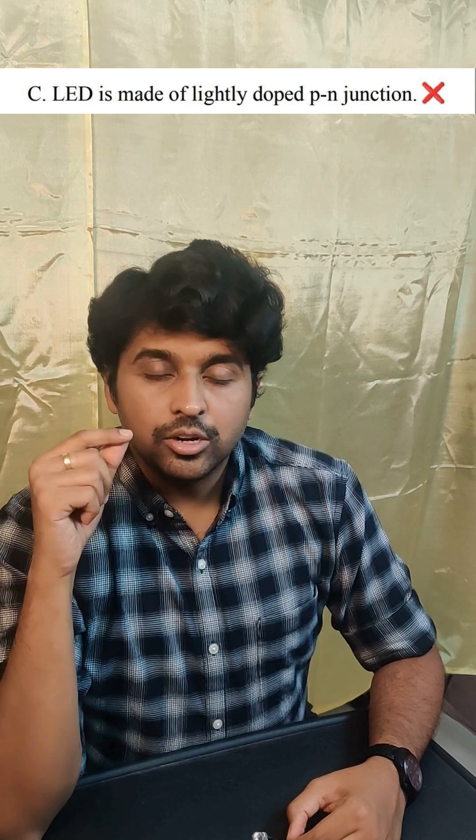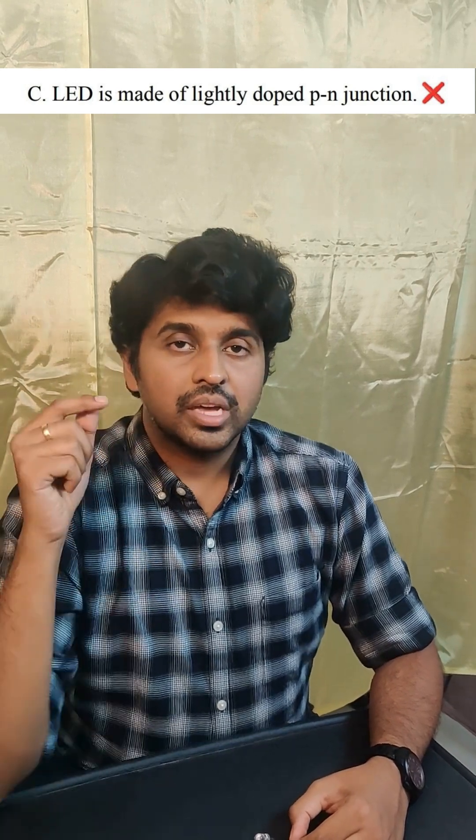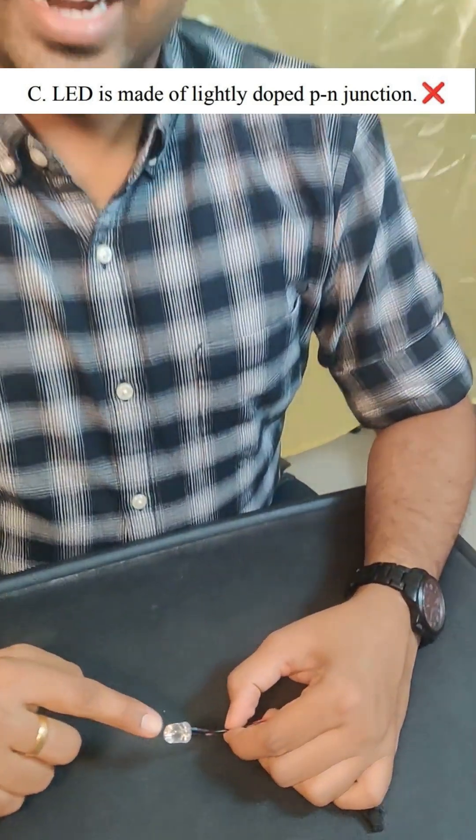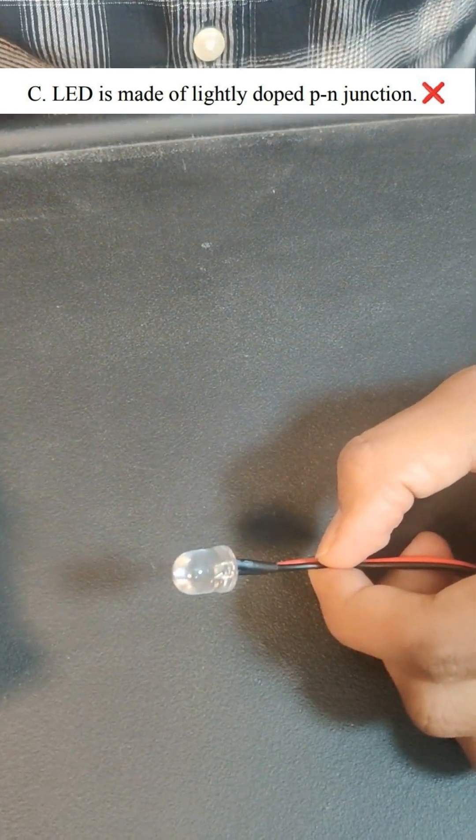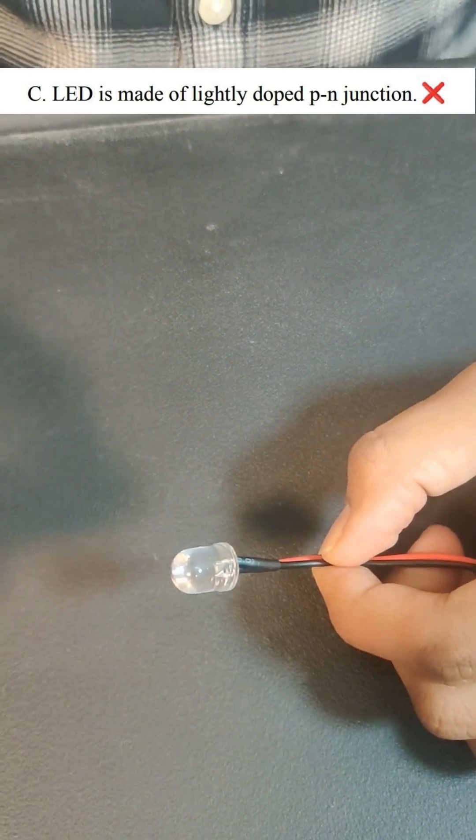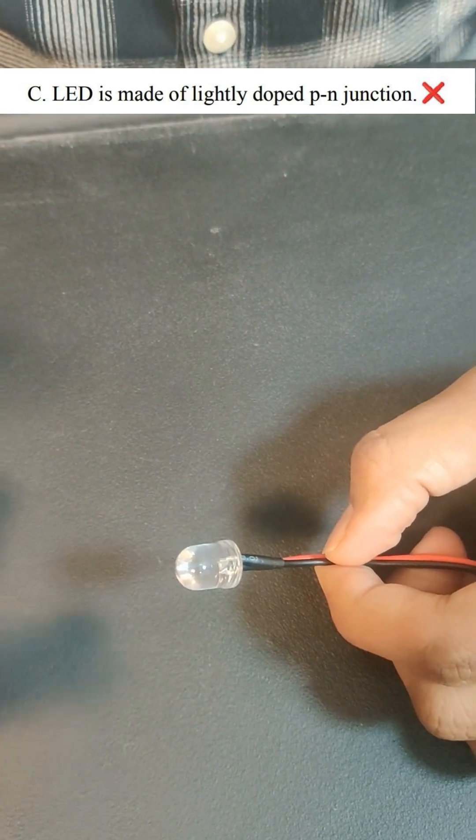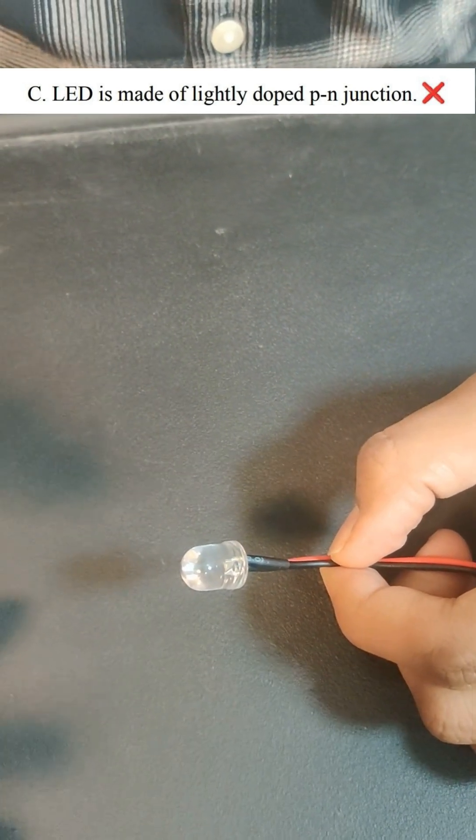LED is made of a lightly doped PN junction. So in an LED, the light comes because the charge carriers are jumping between valence band and conduction band. So we need to have more number of charge carriers jumping for a good amount of light.